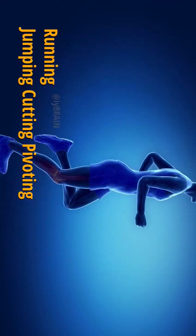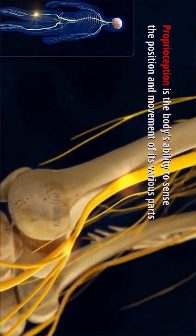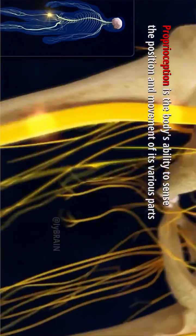The ACL also plays a role in proprioception. It provides feedback to the brain about the knee's position and helps control muscle activity to protect the joint.